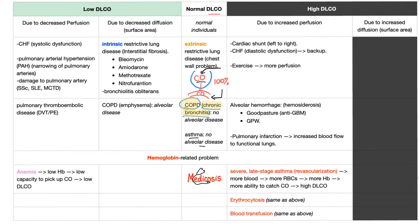What causes decreased perfusion? First, CHF due to systolic dysfunction — the heart cannot pump blood, the right ventricle cannot pump blood into the pulmonary artery, so the pulmonary artery delivers less blood to the alveolar interface. If you deliver less blood, you have less red blood cells, less hemoglobin, and you will catch less carbon monoxide. So if the CO in the alveolus was 100%, what ends up in the blood is only 80%. CHF leads to decreased DLCO.